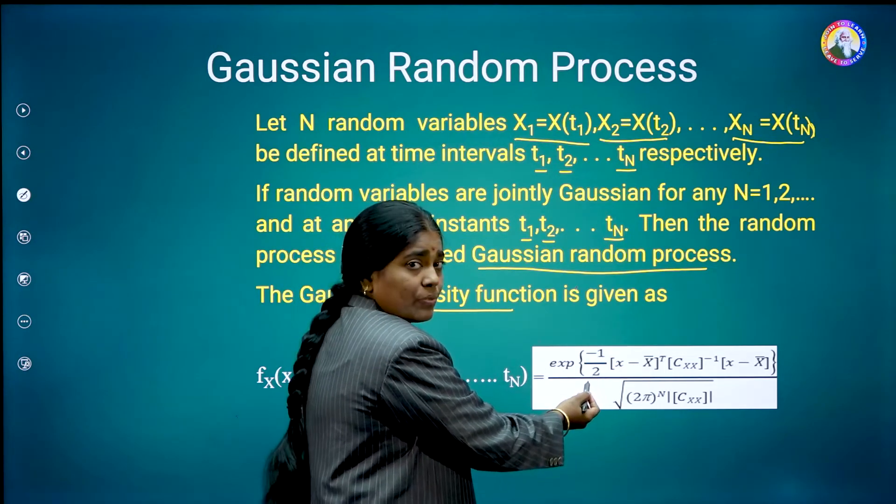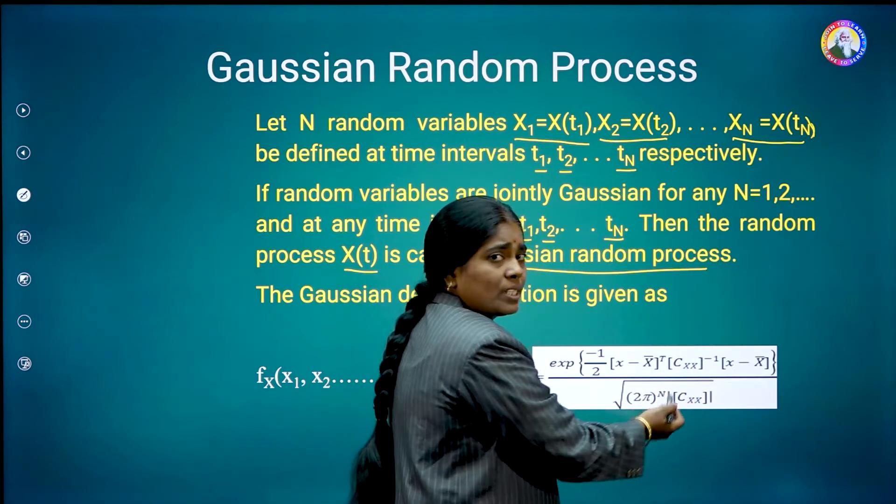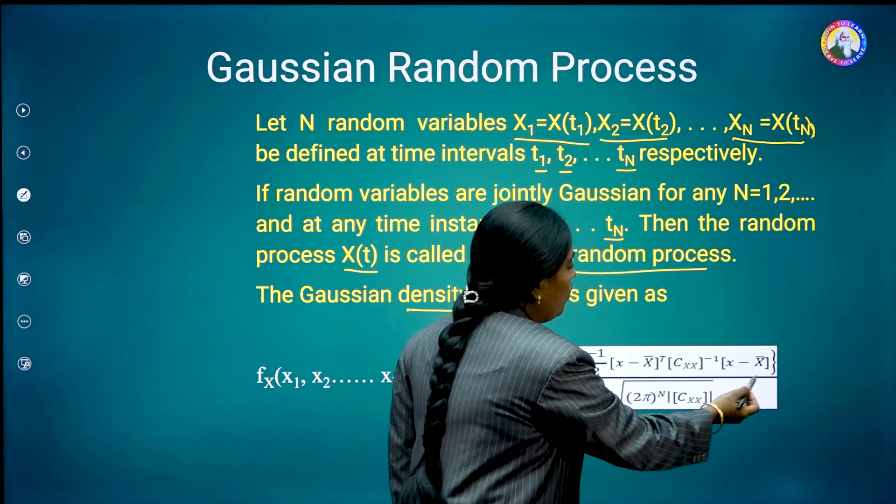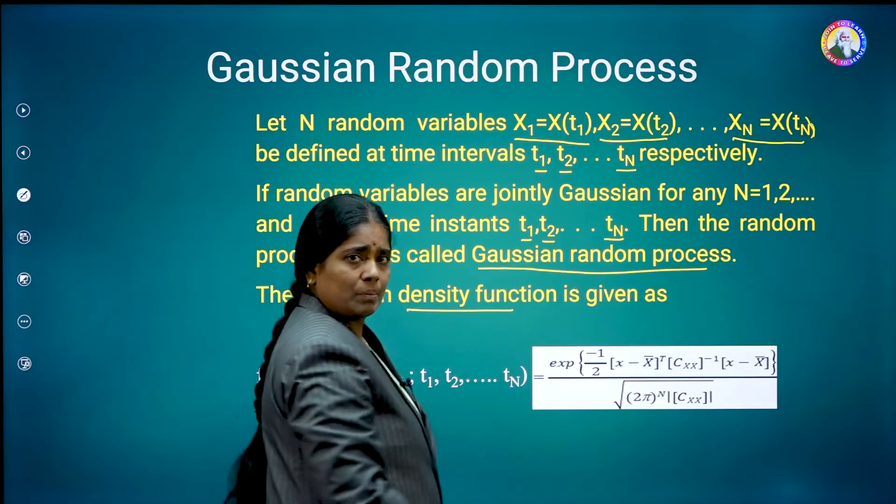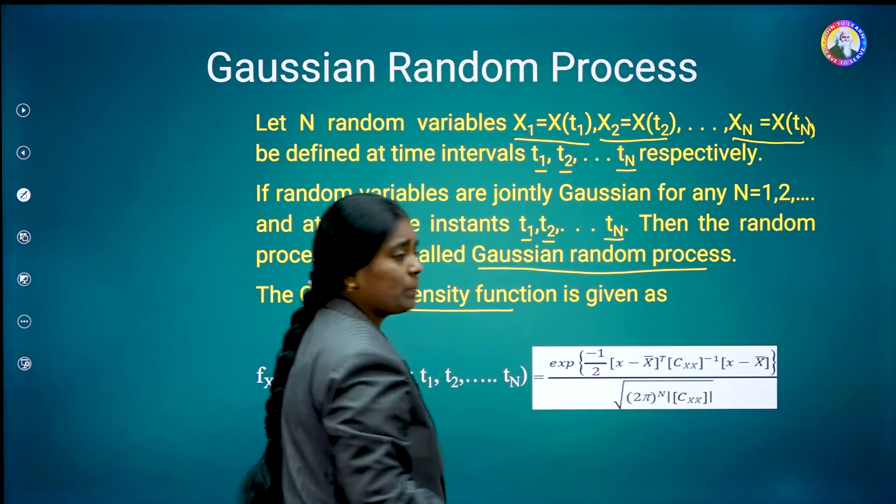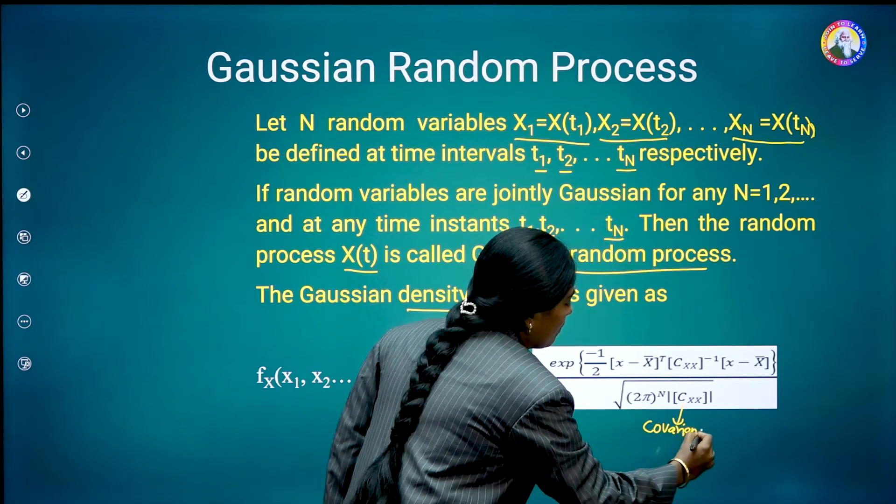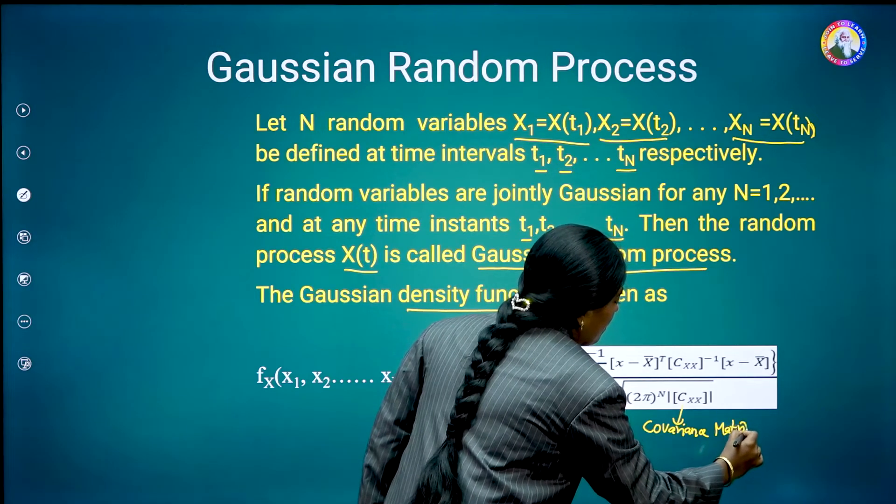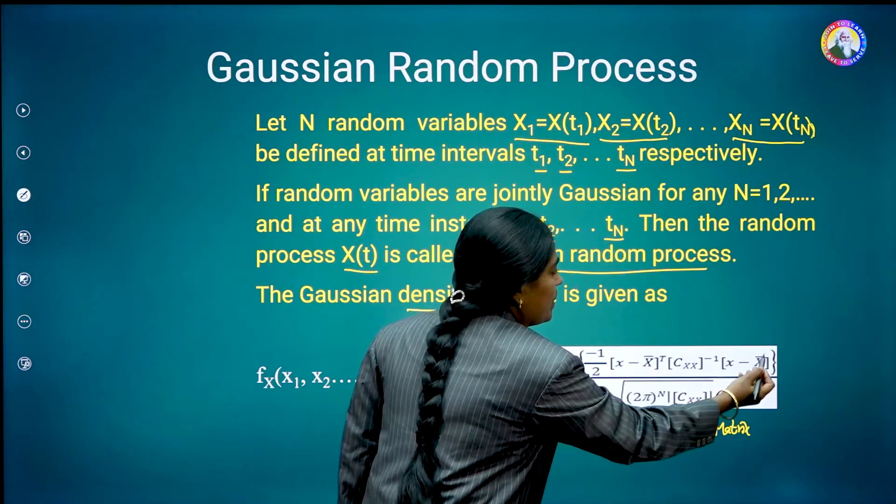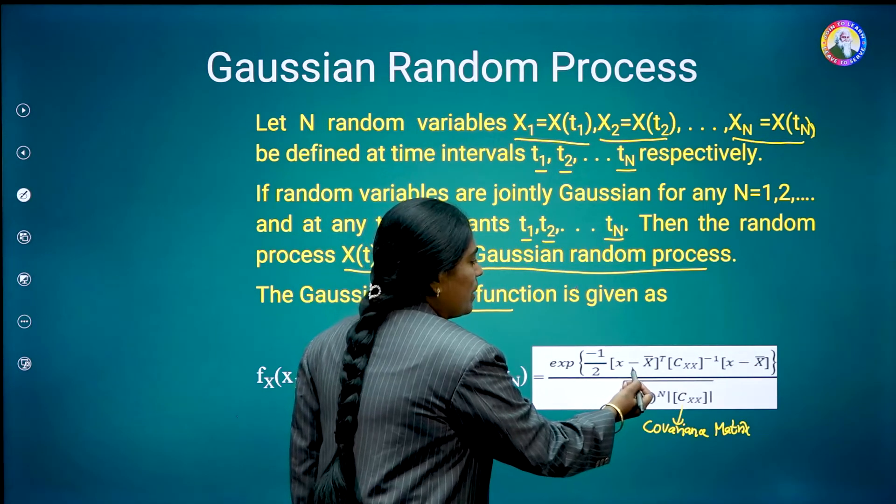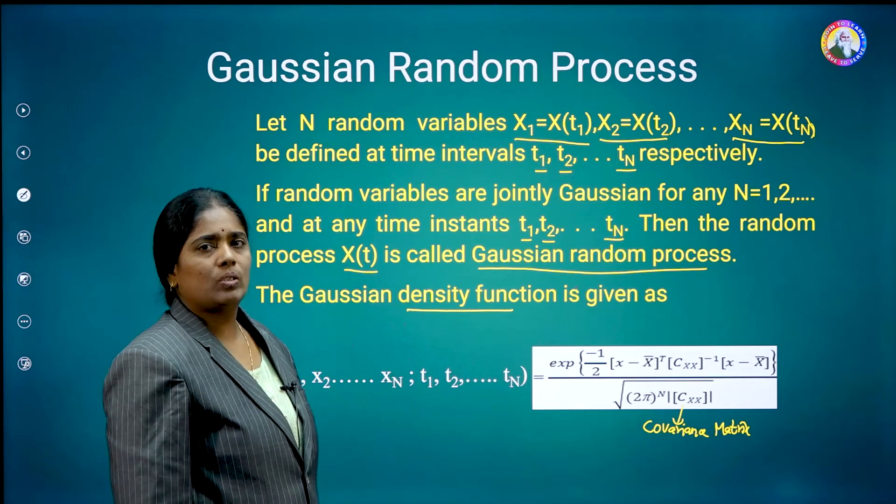exponential of minus 1 by 2, x minus x bar whole transpose into cxx whole inverse into x minus x bar, divided by square root of 2 pi whole power n mod cxx. Here, you can observe that these square brackets indicate that with respect to matrix. cxx is known as the covariance matrix, and this x bar is nothing but the mean of the random process x of t at the respective time. That's why x minus x bar is nothing but one matrix, and by using the respective matrices, we are able to define the n-dimensional Gaussian random process.